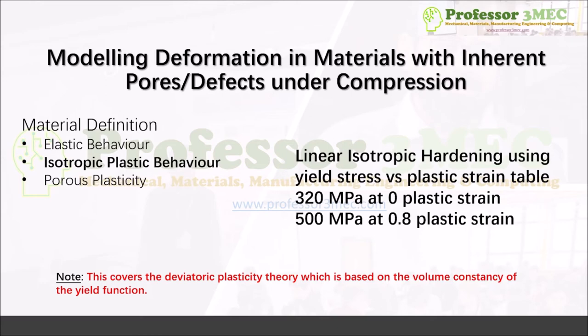For isotropic plastic behavior, there are videos on the channel explaining how to identify material parameters for isotropic hardening using the conventional approach in Abaqus, and also using models like the Johnson-Cook model. In this case, I'm using a linear isotropic hardening behavior. I define a table of yield stress versus plastic strain: yield stress starts at 320 MPa at zero plastic strain, reaching 500 MPa at a plastic strain of 0.8. These are assumed values; you can define a non-linear function with more table entries.